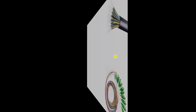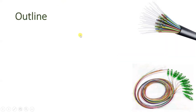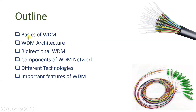Let us have this session based on these outlines. In this session, first I will explain the basics of WDM. After that, we will see the basic architecture of WDM. Then I will explain bidirectional WDM architecture. After that, we will see major components of a WDM network. Then I will show you some technologies available with WDM, and at the end we will see important features of a WDM network. Let us begin with the basics of WDM.